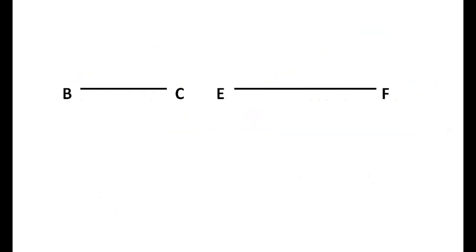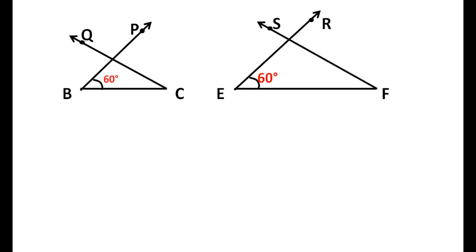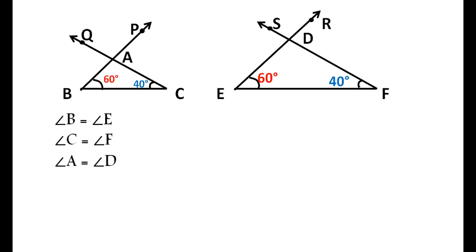Let us examine by doing the following activities. Draw BC equal to 5 cm and EF equal to 8 cm. At points B and E respectively, construct angle PBC and angle REF equal to 60 degrees each. Also at points C and F, construct angle QCB and angle SFE equal to 40 degrees each. Rays BP and CQ intersect at point A, and rays ER and FS intersect at D. In the two triangles ABC and DEF, angle B is equal to angle E, angle C is equal to angle F, and angle A is equal to angle D — that is, corresponding angles of these two triangles are equal.